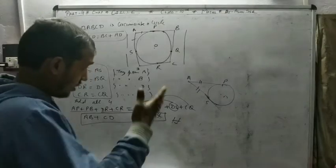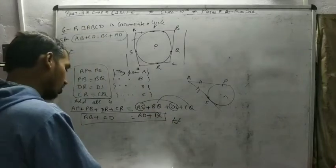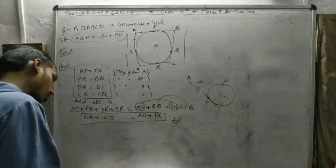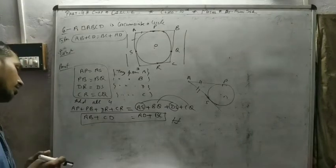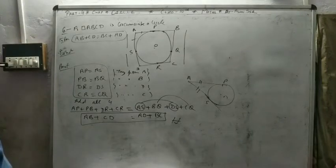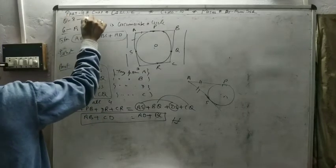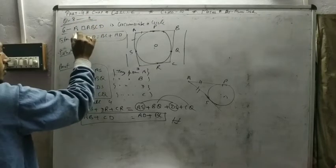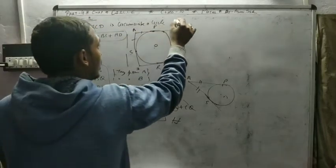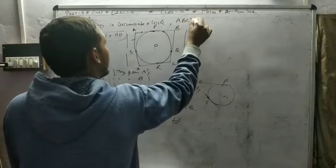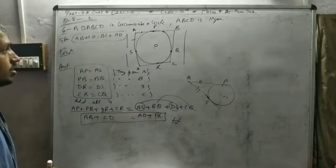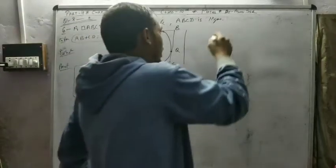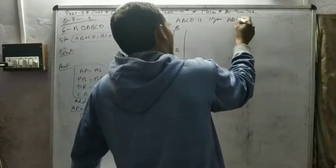Don't be confused — the next part is a similar question. Read it: prove that a parallelogram circumscribing a circle is a rhombus. This is similarly solved. So questions 8 and 11: ABCD circumscribes a circle and ABCD is a parallelogram. It is given that AB equals CD and BC equals AD.